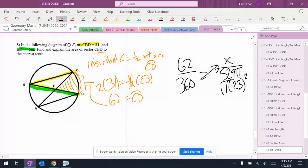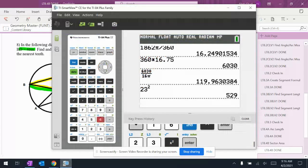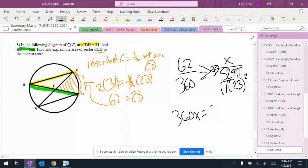And then an x in the back. So I get 360x equals 62 times 529, which is 32,798. And like Marley, I'm just going to leave it in terms of pi until I get to the very end.